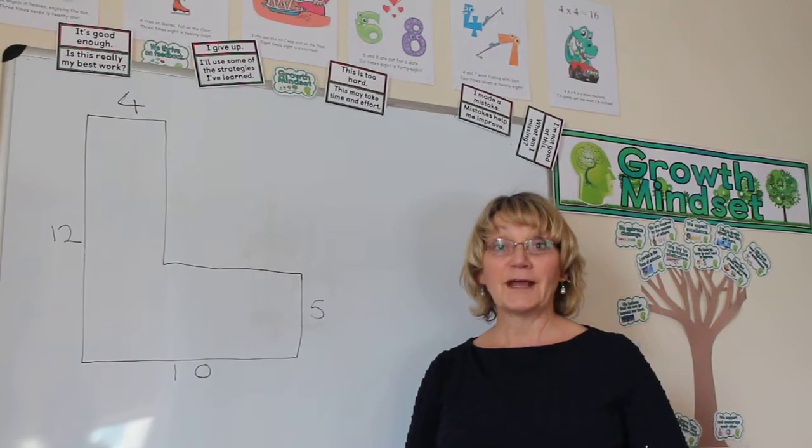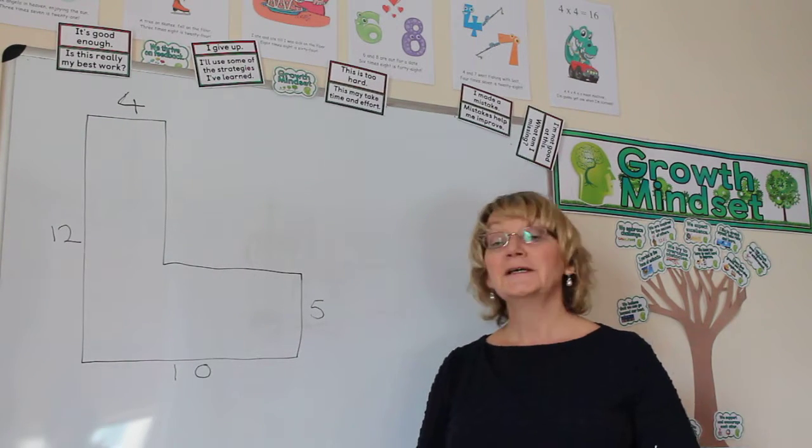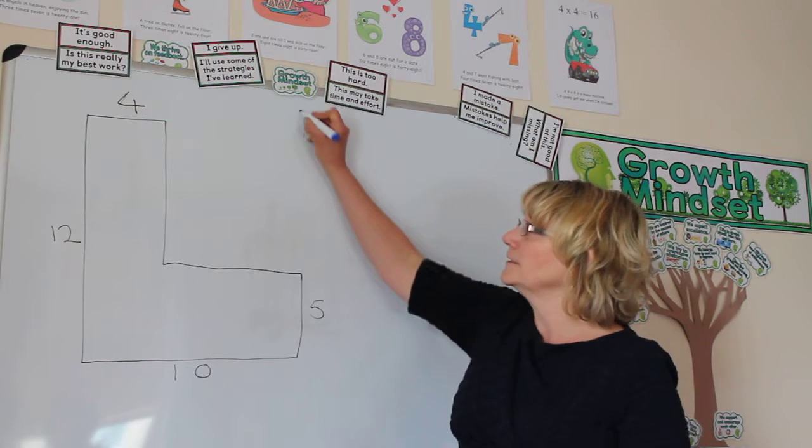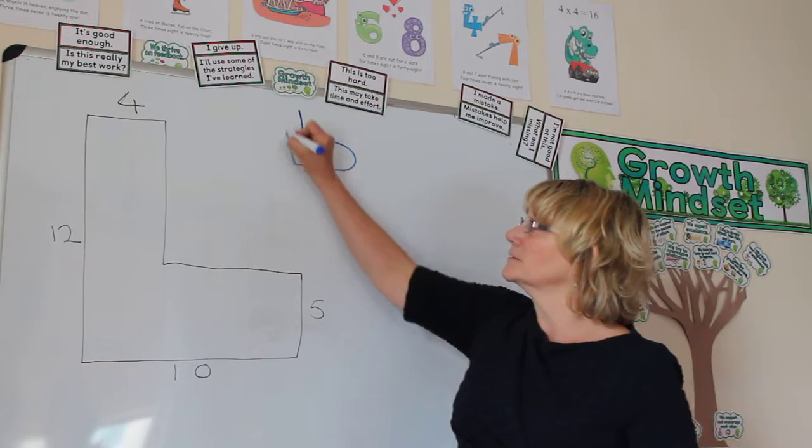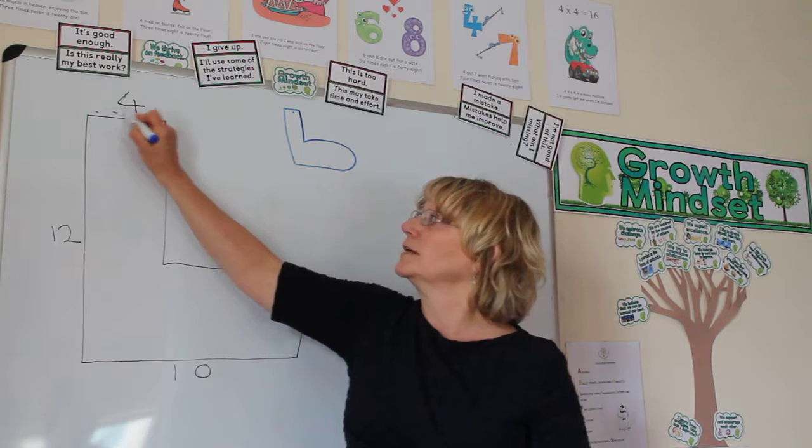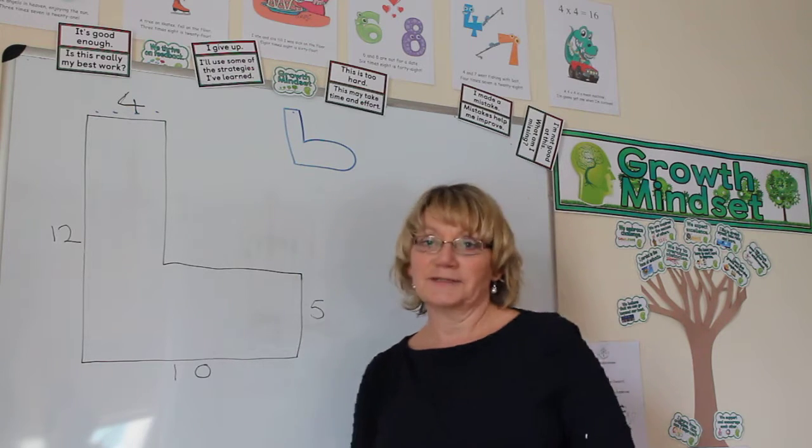To find the perimeter on the shape we have to walk all the way around the outside. So what we say is Peter Perimeter, with his giant foot, walks around the outside of the shape and gathers all the numbers together as he goes.